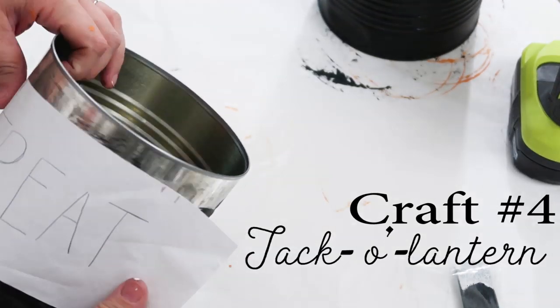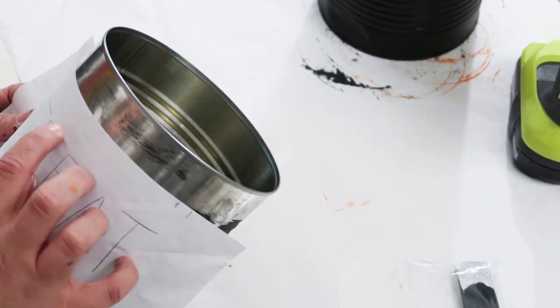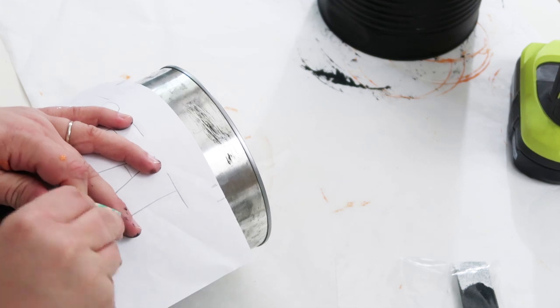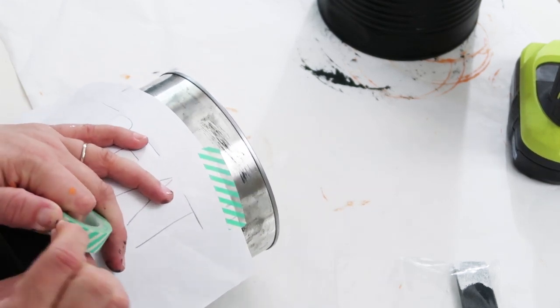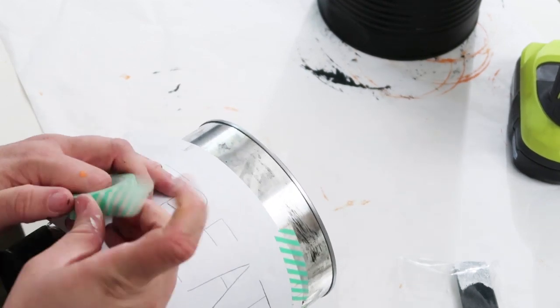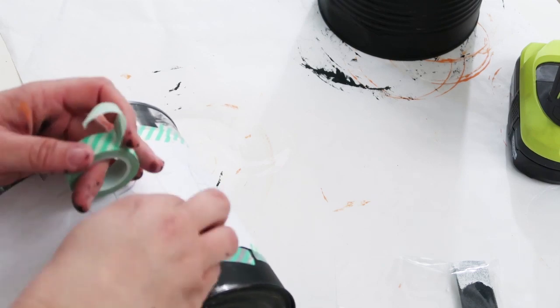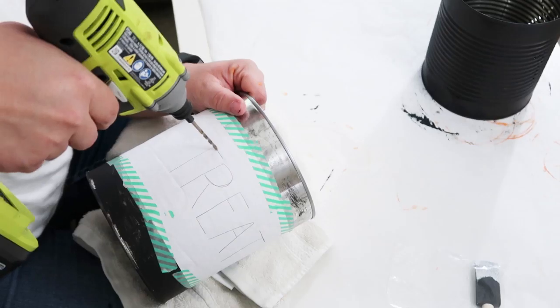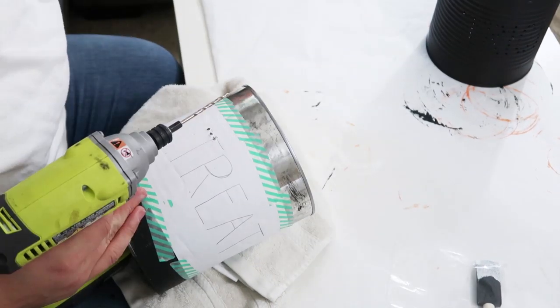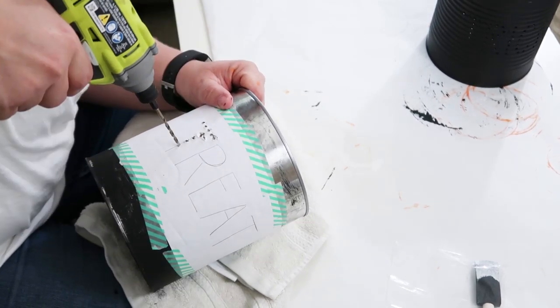For craft number four you are going to use an extra large tin and you are going to take a piece of computer paper and sketch down a word that you would like. Now if you don't feel comfortable doing it with your hand you can also print it up and then you are going to tape it onto your extra large tin. Once you've got that in place you are going to put a towel down first to help hold it in place and then use a drill to drill holes into the letter.